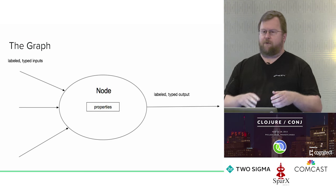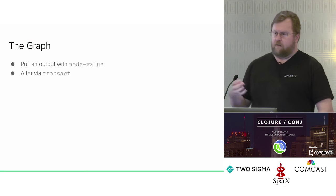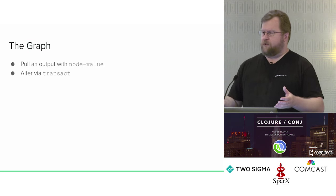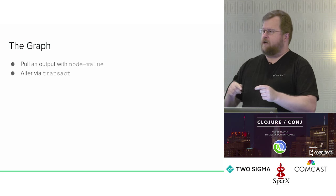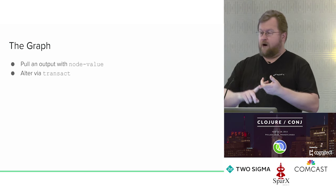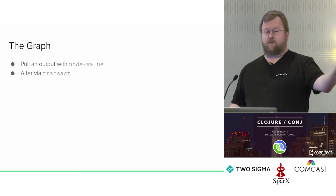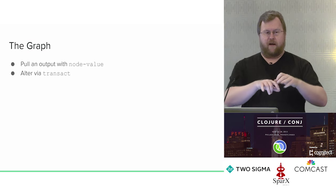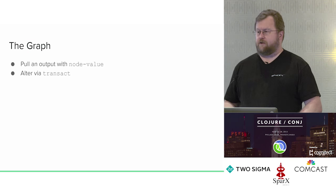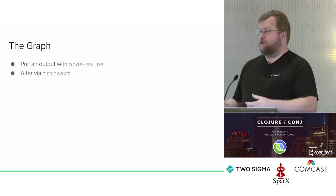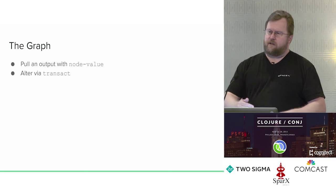Every node in the graph follows the same basic schema. We have outputs produced by production functions — outputs are labeled with a keyword name and typed. Inputs likewise are labeled and typed, with one additional bit of info: an input may be an array input or a single input. If it's an array input it can have many connections; if it's a single input it can only have one. Nodes have properties which are intrinsic to the node — properties also act as outputs. When we call 'node-value' on an output, that triggers a tree of computation, pulling values from properties, other outputs, or upstream inputs.